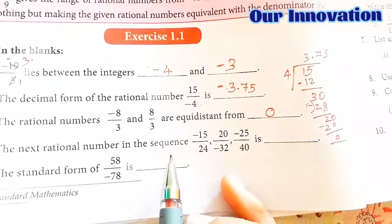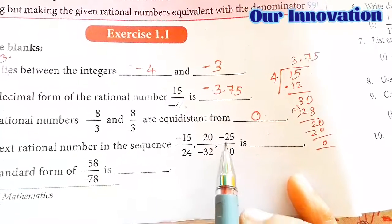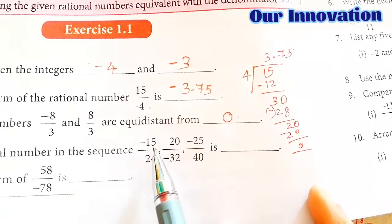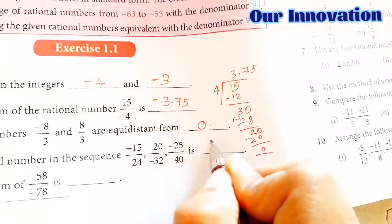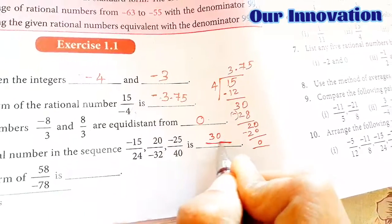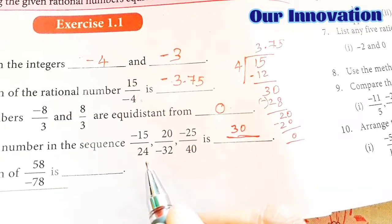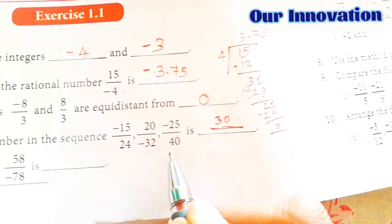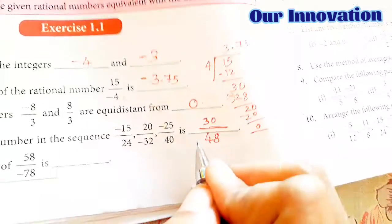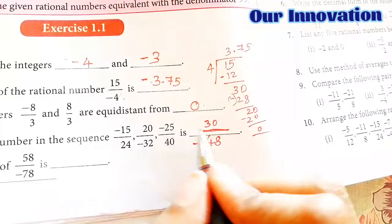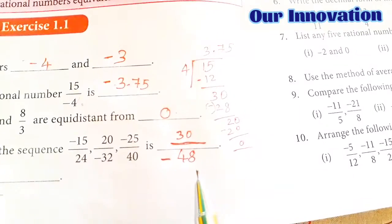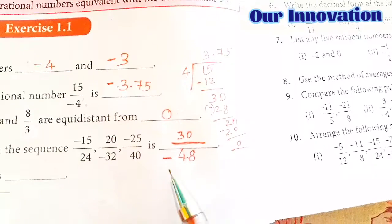The next rational number in the sequence: minus 15 by 24, 20 by minus 32, minus 25 by 40. So what is the next? Look at the 5th table: 3 fives are 15, 4 fives are 20, 5 fives are 25, 6 fives are 30. Signs go: minus, plus, minus, plus. For denominator, 8th table: 3 eights are 24, 4 eights are 32, 5 eights are 40, 6 eights are 48. Signs: plus, minus, plus, minus. So the answer is 30 by minus 48.